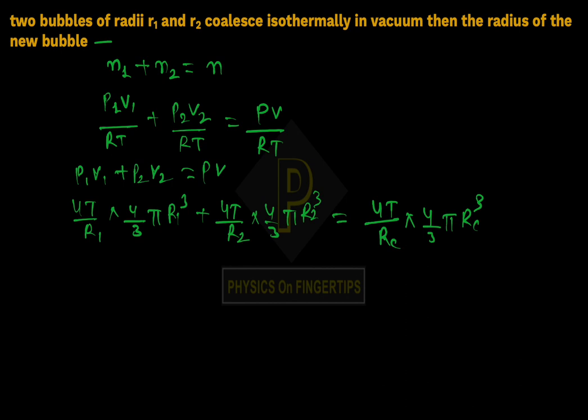So here we know that Rc is equal to root of R1 square plus R2 square.